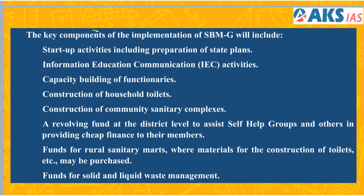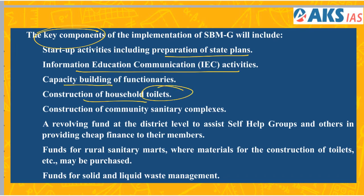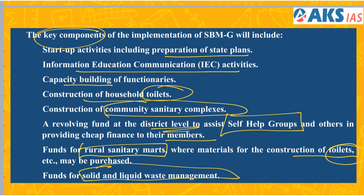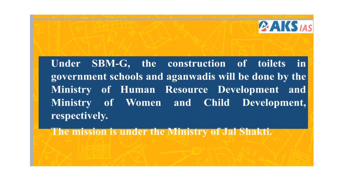The key components under Swachh Bharat Mission Grameen Phase 2 include: startup activities including preparation of state plans, information and education communication activities, capacity building, construction of household toilets, construction of community sanitary complexes, a revolving fund at the district level to assist self-help groups, providing funds to rural sanitation marts where construction material for toilets can be purchased, and funds for solid and liquid waste management systems. Construction of toilets in government schools will be handled by the Ministry of HRD.